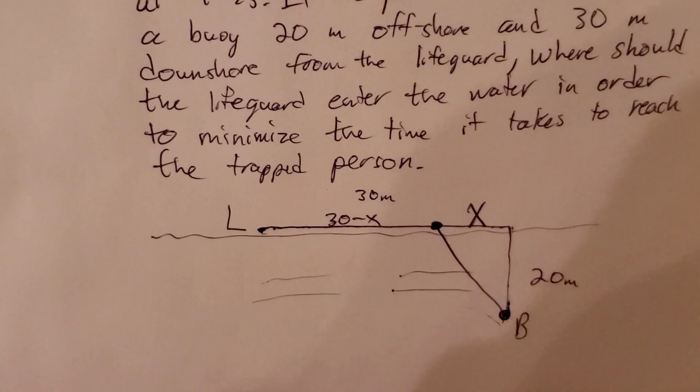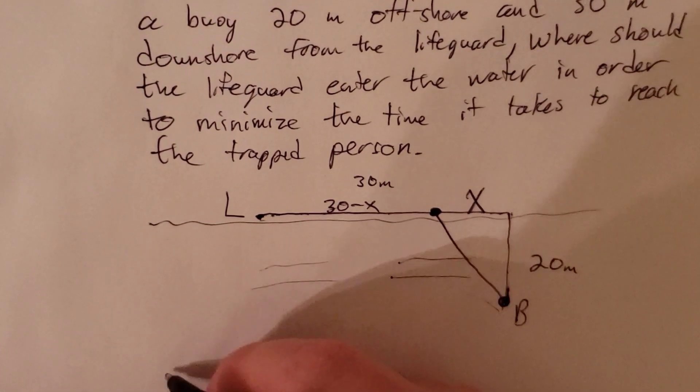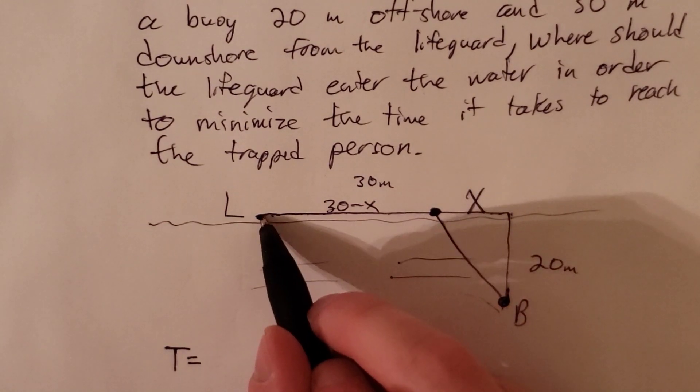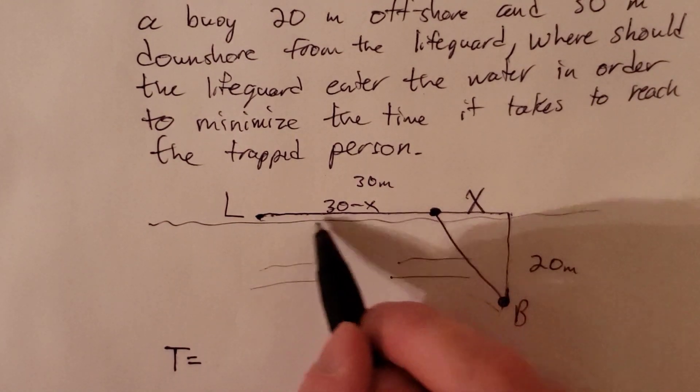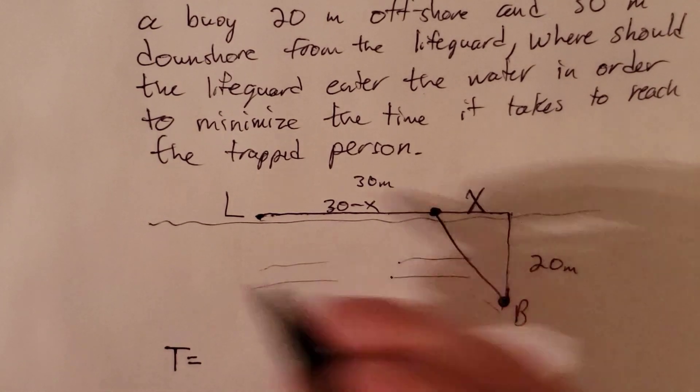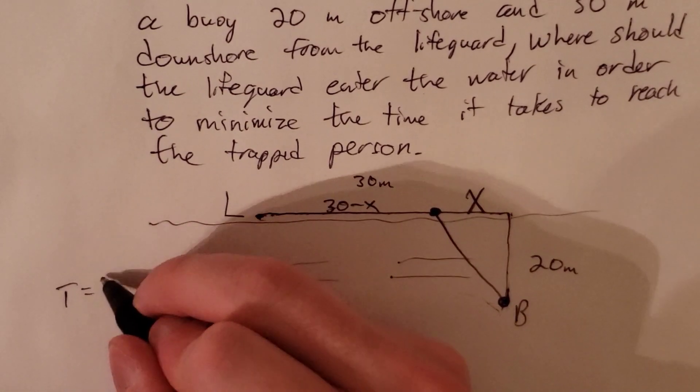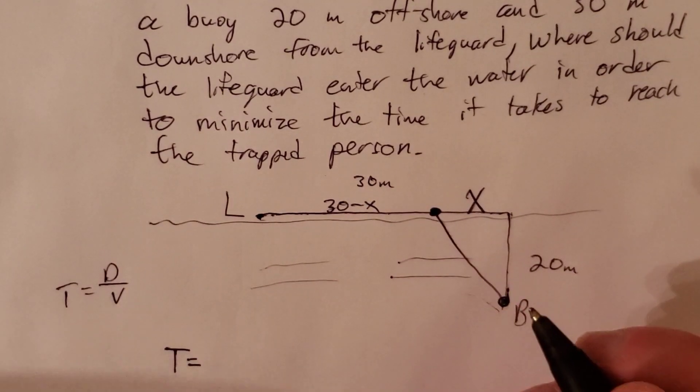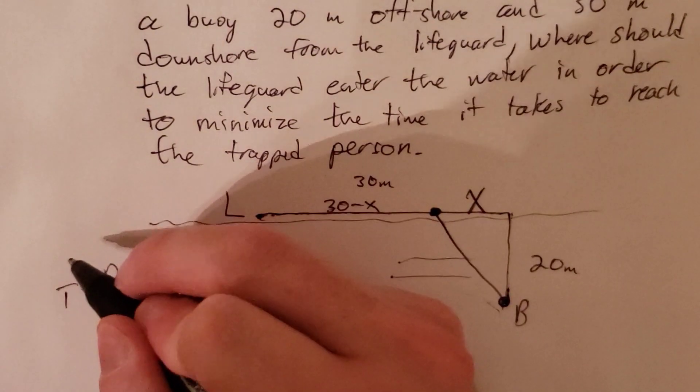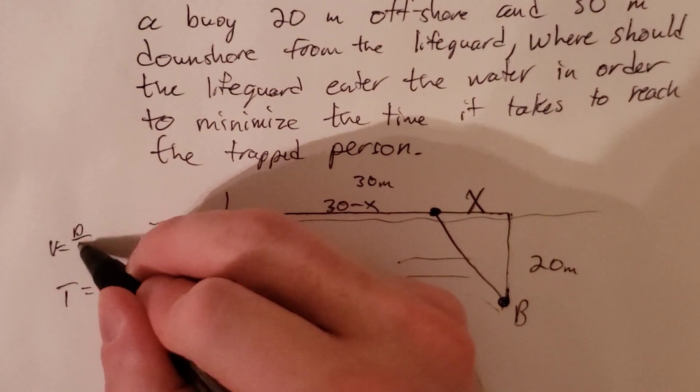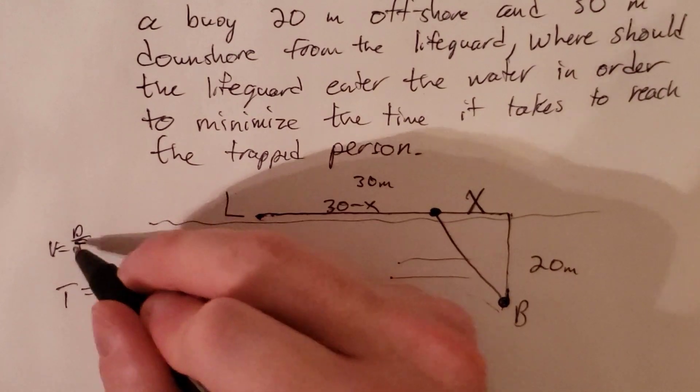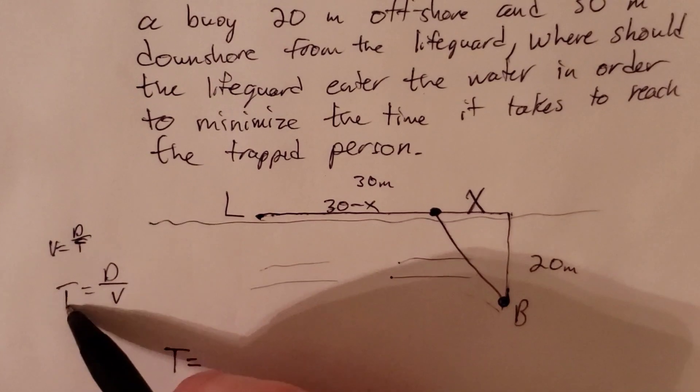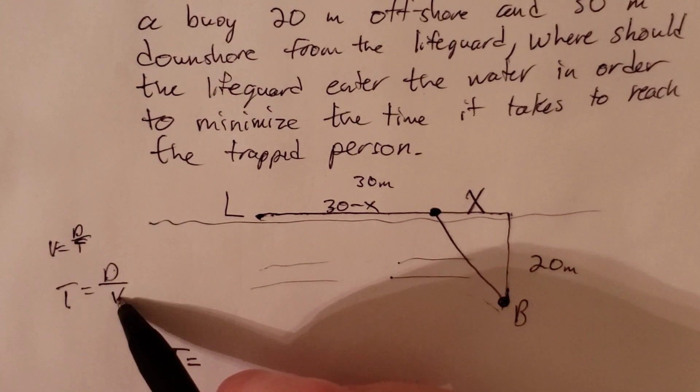Well how do we do that? We want to minimize time. So let's come up with a time function. What is the time the person will spend, the lifeguard will spend running along land? Time is, notice that time is distance divided by velocity. You might remember that velocity is distance divided by time. So we can solve for time by multiplying by time on both sides then dividing by velocity. And so you get time is equal to distance divided by velocity.